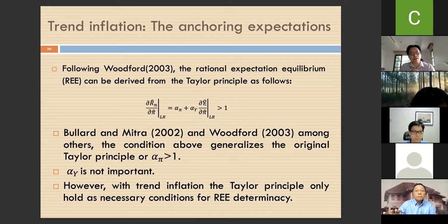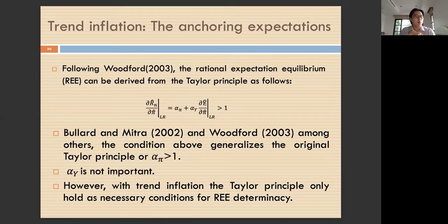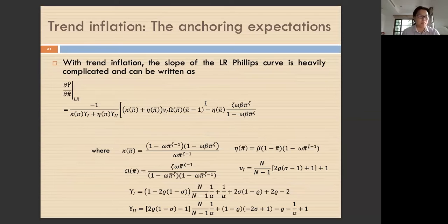When feedback on inflation is bigger than one — the Taylor principle — this means the nominal interest rate should rise more than an increase in inflation in the long run. In the long run, inflation equals trend inflation. With trend inflation, the Taylor principle only holds as a necessary condition for rational expectation equilibrium determinacy. With trend inflation, the slope of the long-run Phillips curve becomes more complicated.